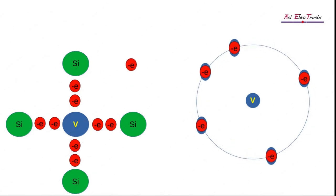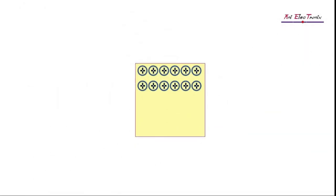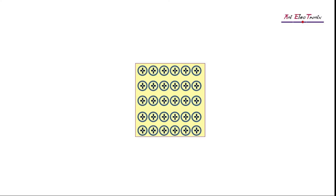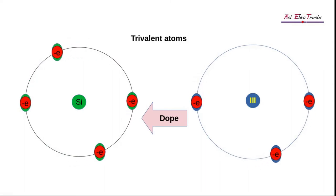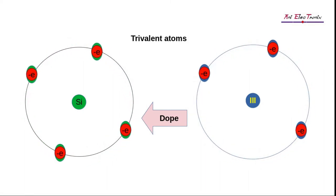So, now that the extra electron belongs to a larger orbit, it is now a free electron. Similarly, we will examine how to increase the number of holes in the silicon crystal. As we can see, to increase the number of holes, we need to reduce the electrons in the silicon crystal.